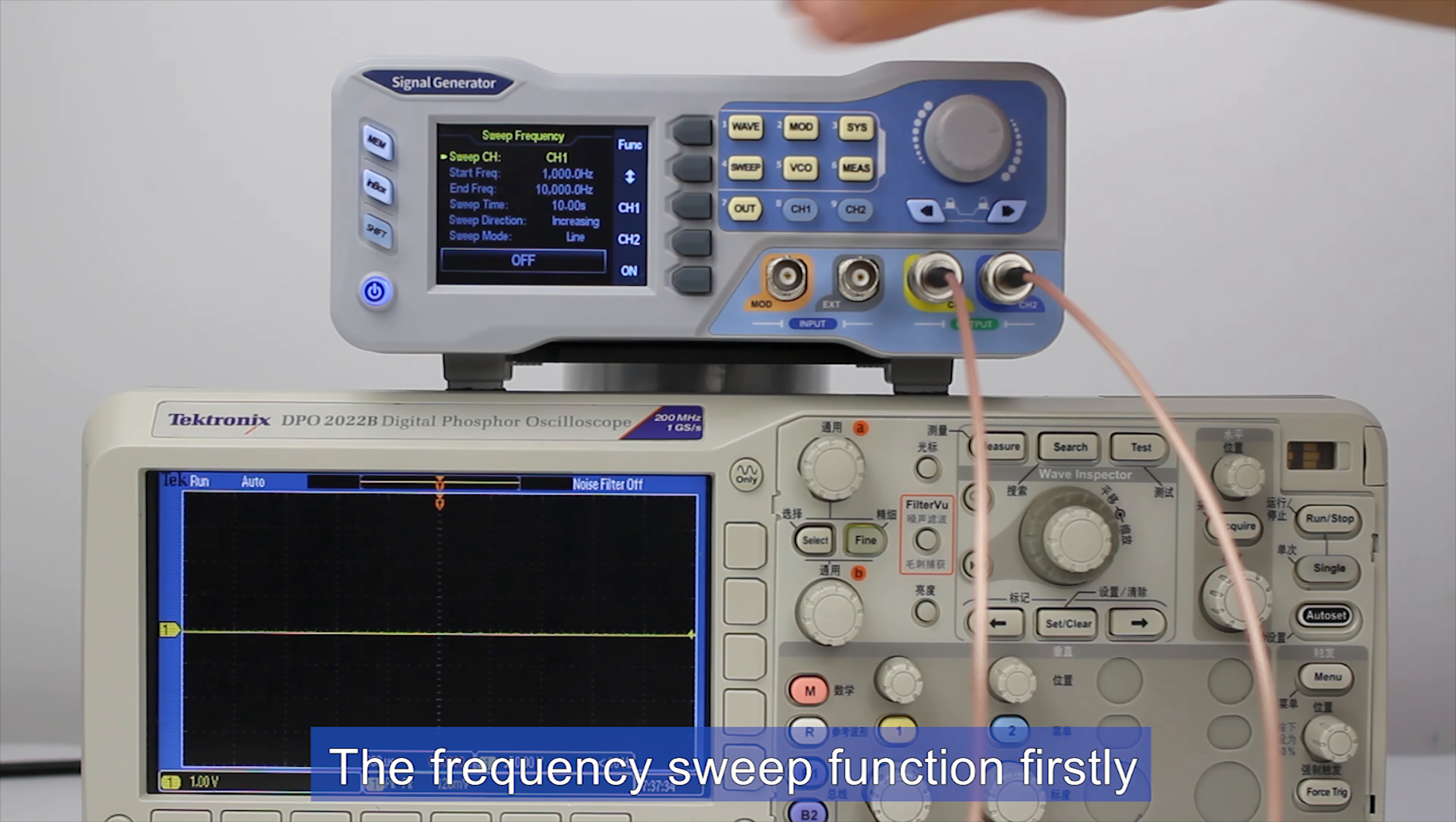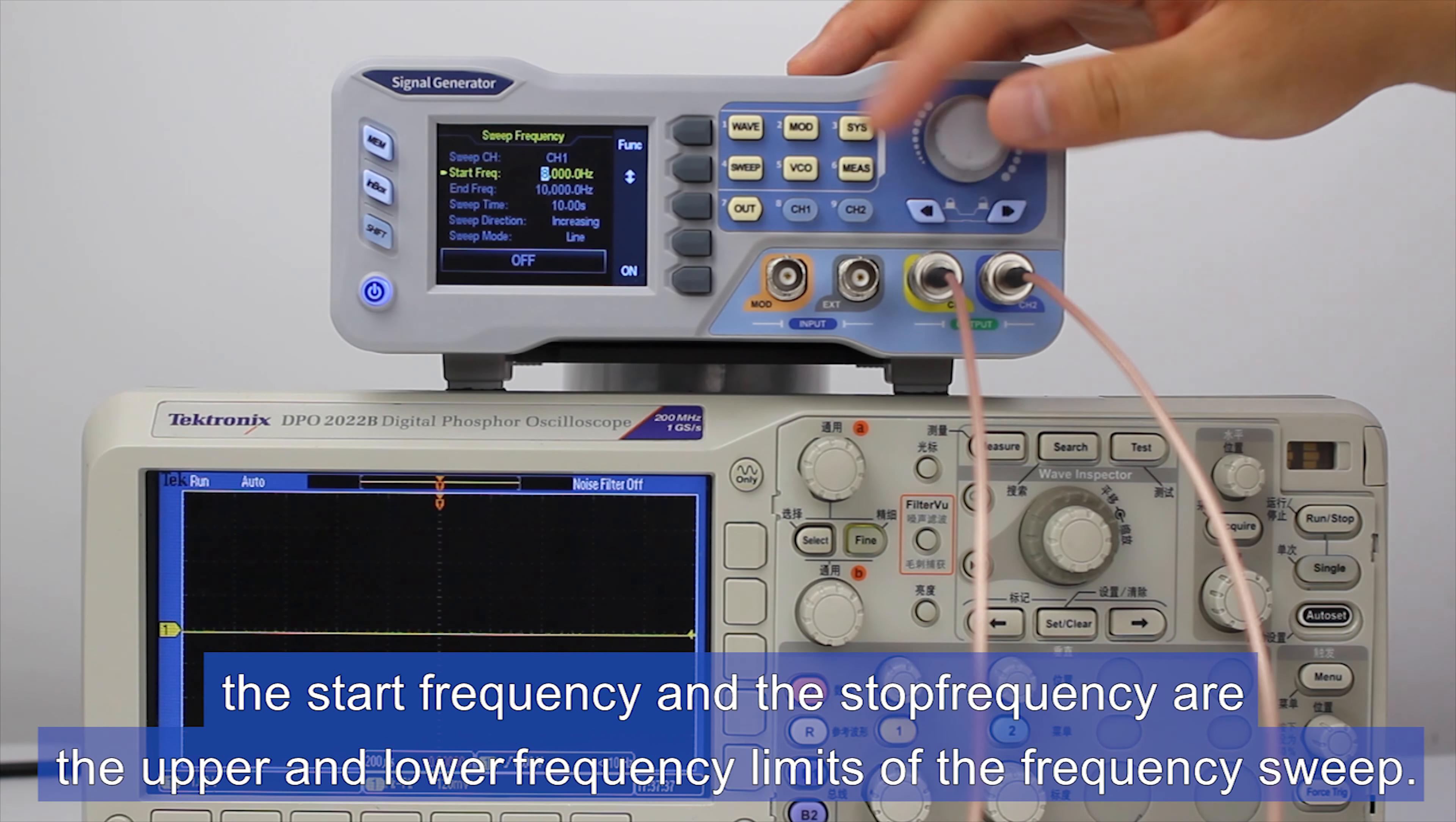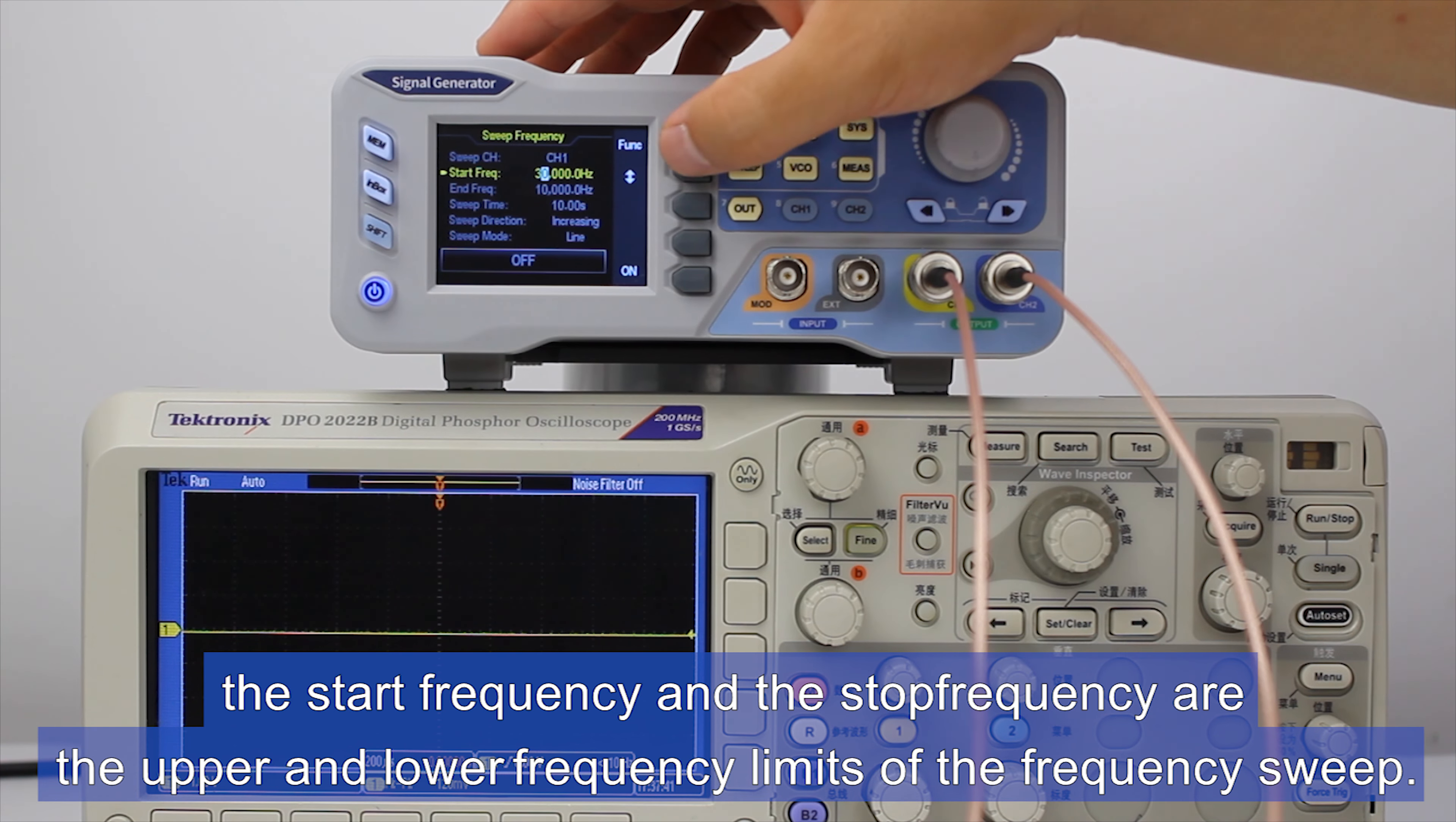The frequency sweep function: the start frequency and the stop frequency are the upper and lower frequency limits of the frequency sweep.